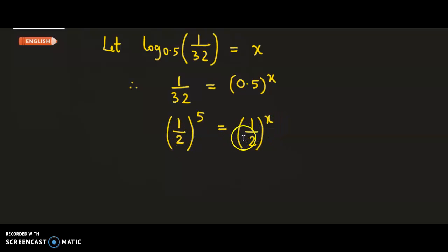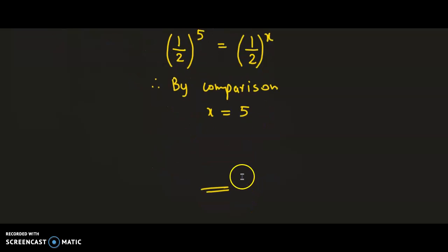Now if you observe on both sides we have the same basis. So therefore by comparison we could say x is equal to 5. But what is x? x is nothing but the log value. So we have log of 1 by 32 to the base 0.5 is equal to 5.